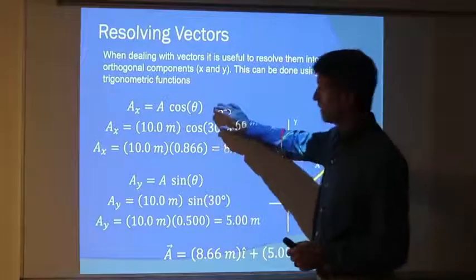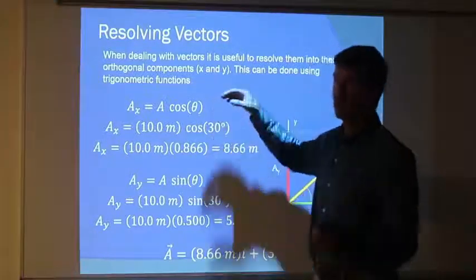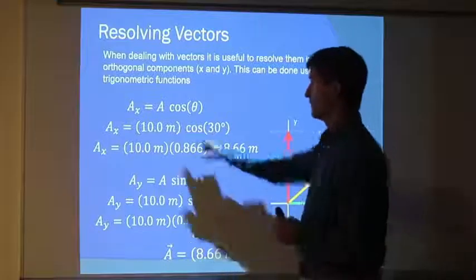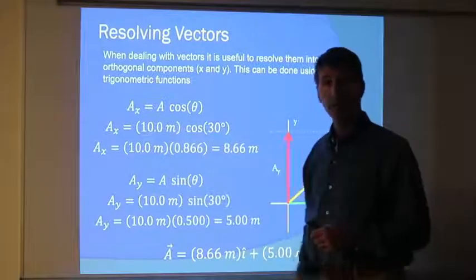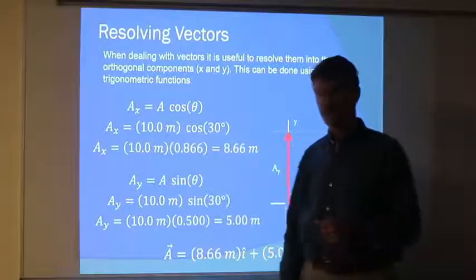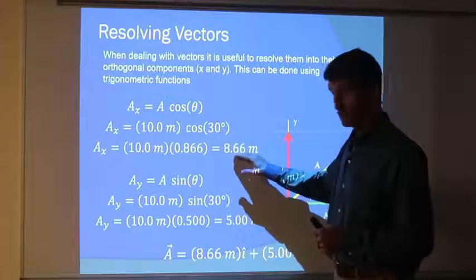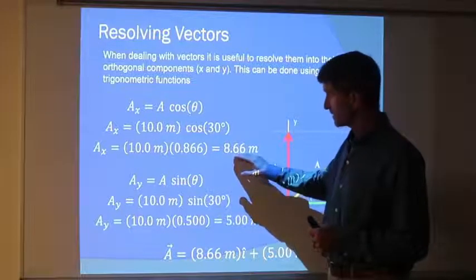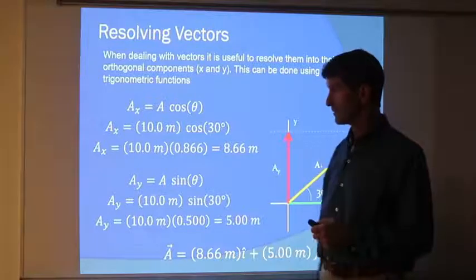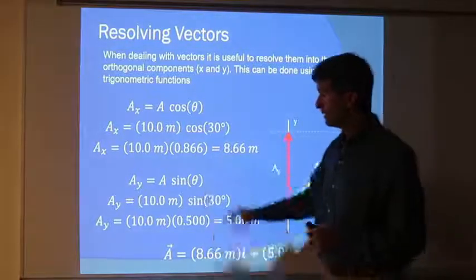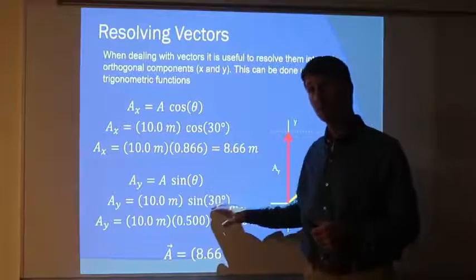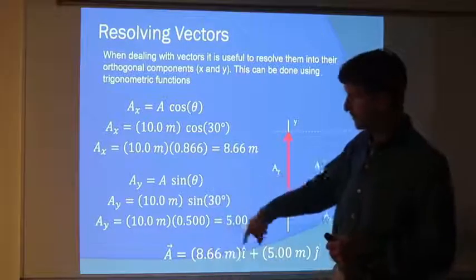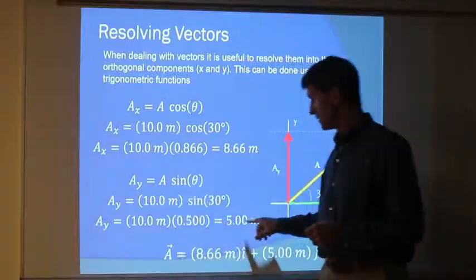Alright, real simple. I want my x component, A times cosine theta. 10 meters times the cosine of 30 degrees. Cosine of 30 degrees is 0.866. So 10 meters times 0.866 gives me 8.66 meters. Ay, sine of 30 degrees, you should know this, is 1 half. So 1 half of 10 is 5 meters.